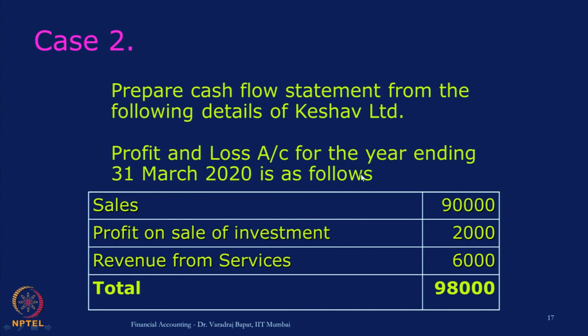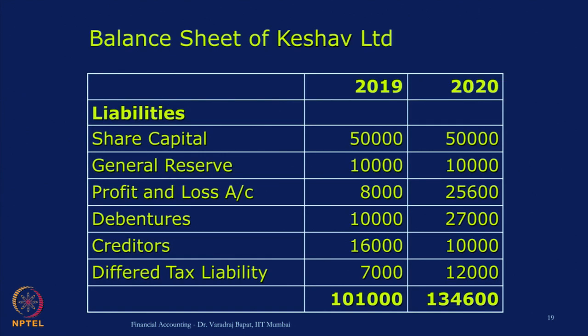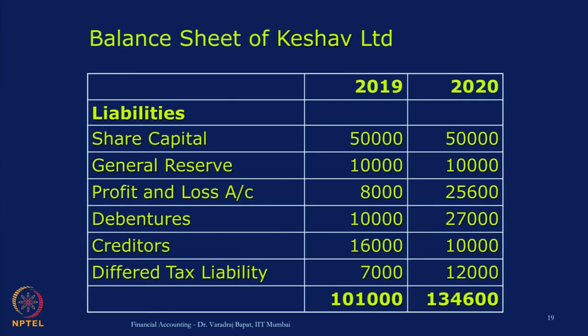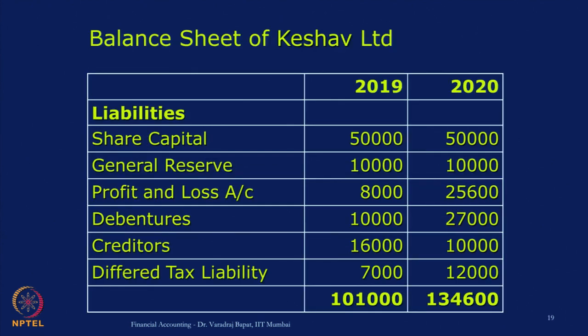We will look at the case once again. We are asked to prepare a cash flow statement for Keshav Limited. As a process of preparing it, as a working note, what I had asked you to do was take every item of the balance sheet and P&L, mark the change, and mark it as O, I, or F. Once that marking is done, the rest of the work — the actual preparation of cash flow — is very simple. We have done the marking last time, so just have a look once again.